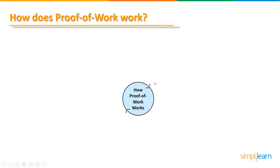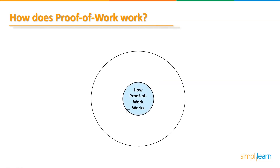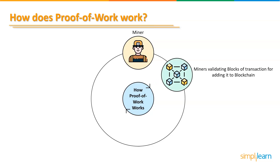The right to add new blocks to a proof of work blockchain is given to individuals willing to expend computational resources to solve cryptographic issues. The participants competing to add new blocks are called miners, and the process is called mining. Miners use their computational power to locate a valid block when a transaction needs to be added to the blockchain, by finding a hash that meets the network protocol's specific requirements.